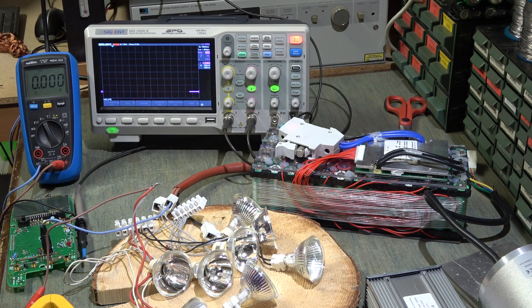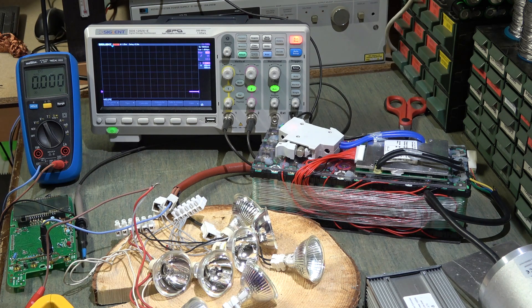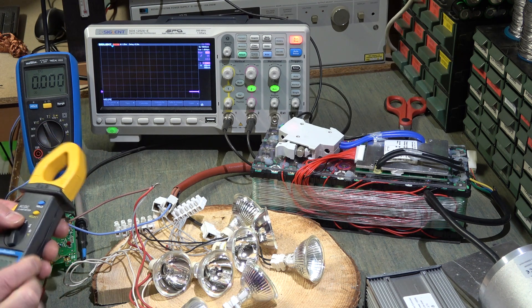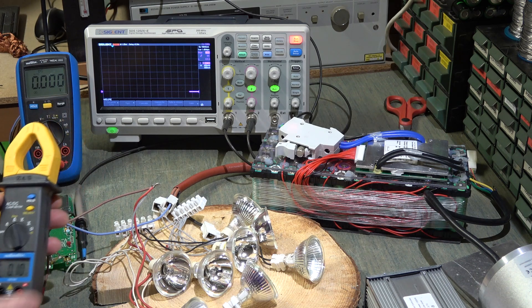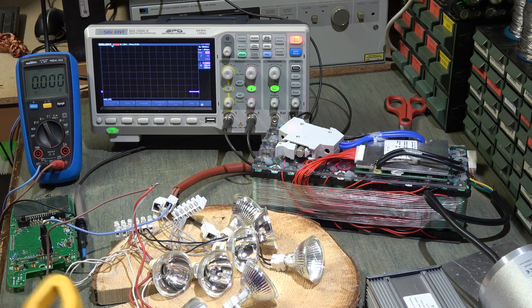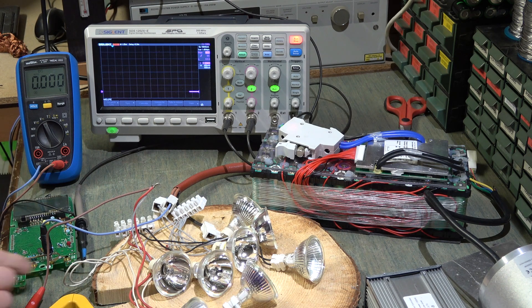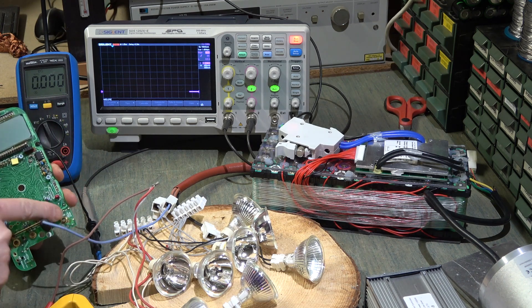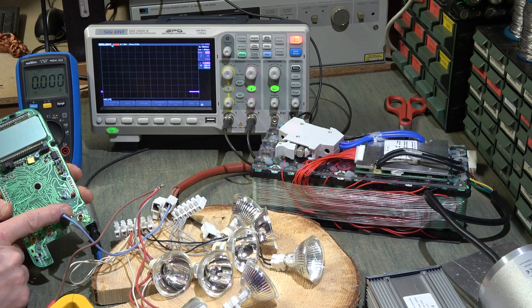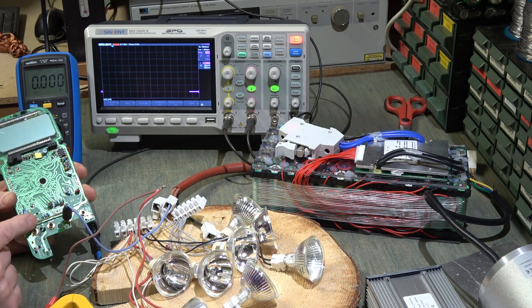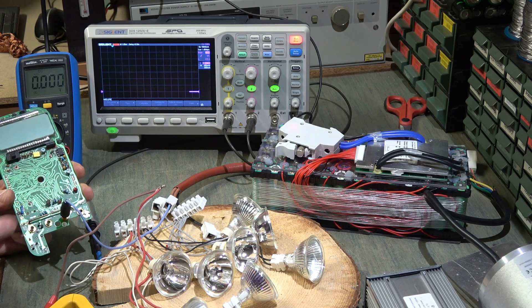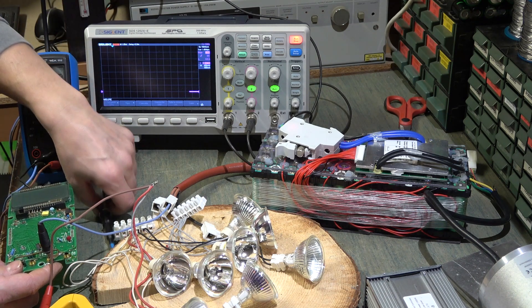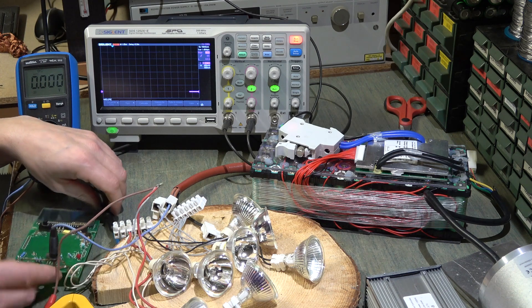Adesso per vedere la corrente utilizzerò questa pinza amperometrica, non è precisissima però per avere un'indicazione degli ampere va molto bene. E poi userò questo pezzo di tester ormai da buttare, mi servirà questo shunt che sarebbe quello che serve per fare la misura dei 10 ampere. La corrente passa tutta di qua in serie al circuito, io lo utilizzerò per l'oscilloscopio collegandoci una sonda.